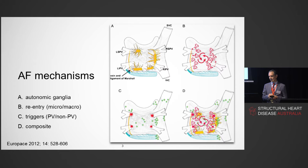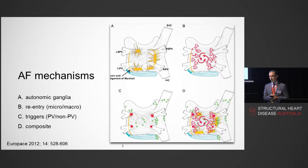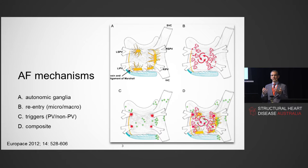The second important mechanism is panel B: macro and micro re-entrant wavelets — signals that collide and degenerate into the disorganised pattern of atrial fibrillation. We also know about autonomic ganglia and the autonomic nervous system's modulation of the heart. Yesterday I did a procedure where the patient had a 15-second pause during ablation near the left upper vein — a vagal response, and actually a marker of success.